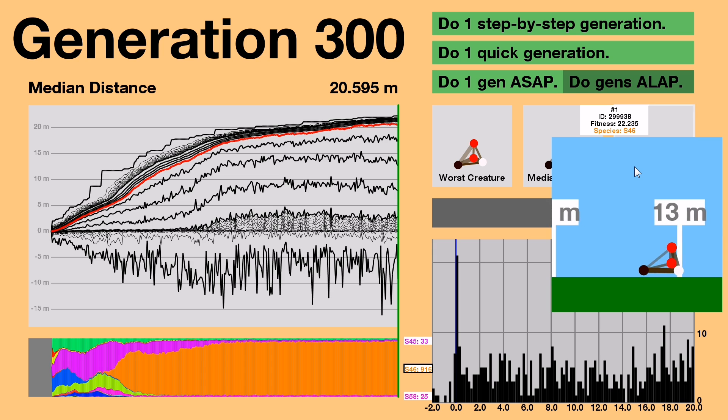You have to admit, the best creature is pretty efficient at running. 22 meters? That's like 11 times better than the best creature from generation 1.